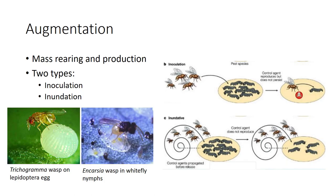Augmentation is sometimes used as a general term for the supplementation of existing natural enemies, including periodic release of those that do not establish permanently but are nevertheless effective for a while after release. Periodic releases may be made regularly during a season so that the natural enemy population is gradually increased to a level where pest control is very effective.